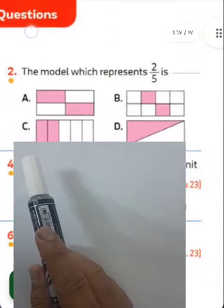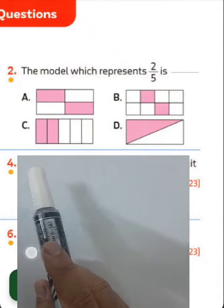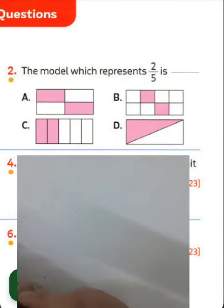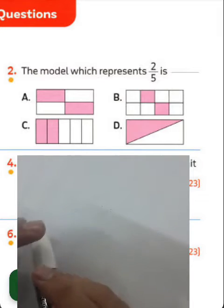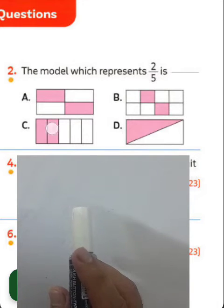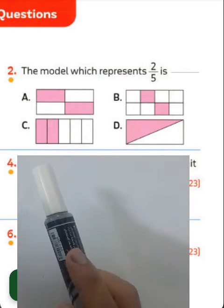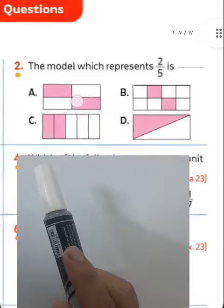Question number two: the model which represents 2 over 5. Here we have two parts colored from five parts. Look at letter C — we have two parts colored from five parts, so you must choose letter C for this question.